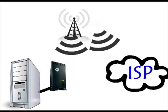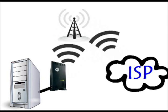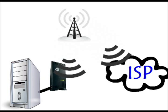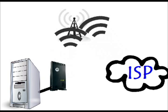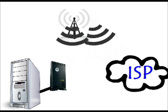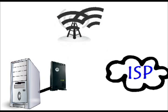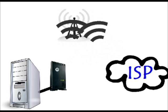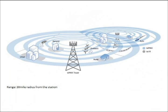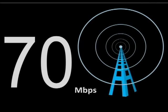In line-of-sight service, there is a fixed dish antenna pointing straight at the WiMAX tower from a rooftop or a pole. It is stronger and more stable and uses a frequency range of 66 GHz. On the other hand, in non-line-of-sight, a small antenna on your computer connects to the tower but uses a lower frequency range. WiMAX has wide coverage, high speed, and greater wireless portability.